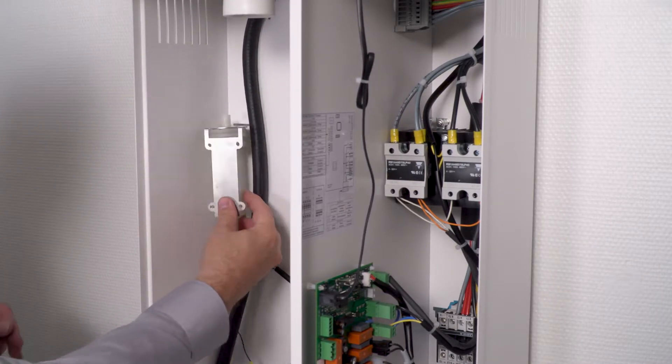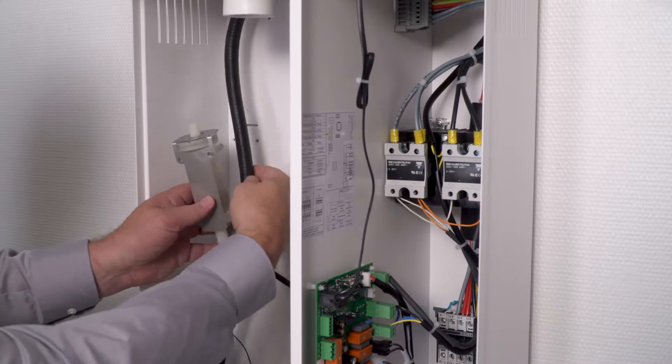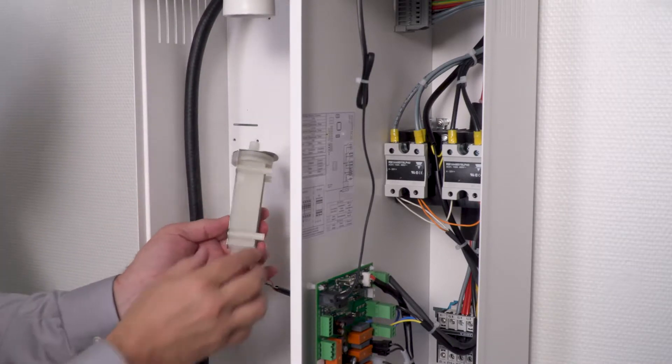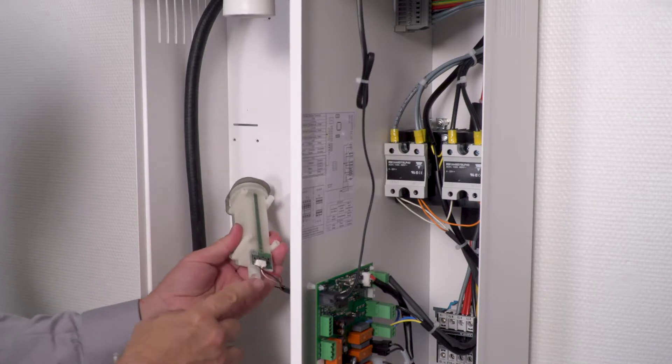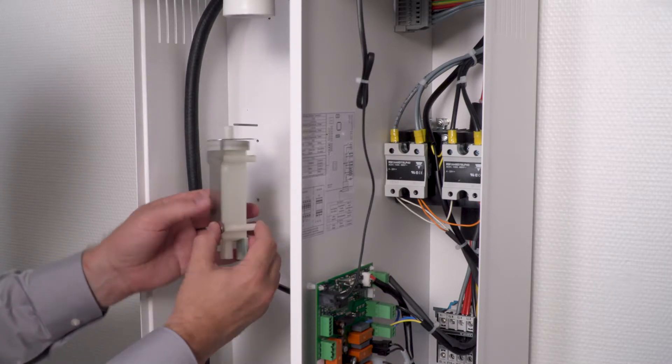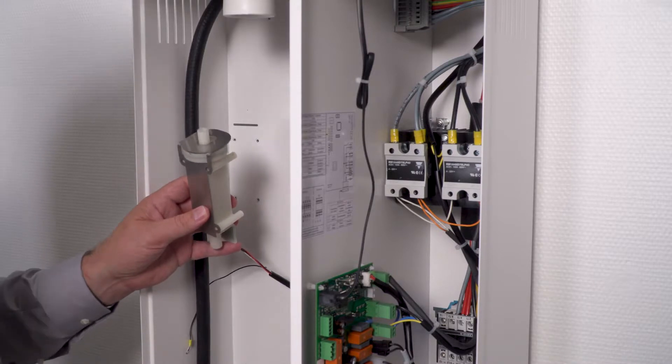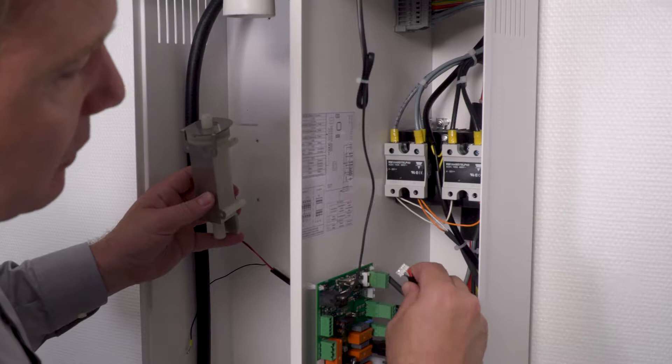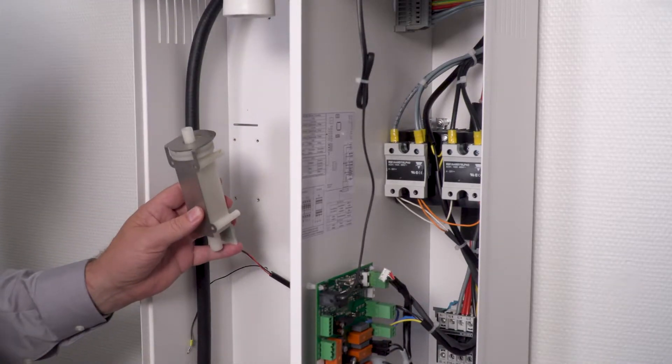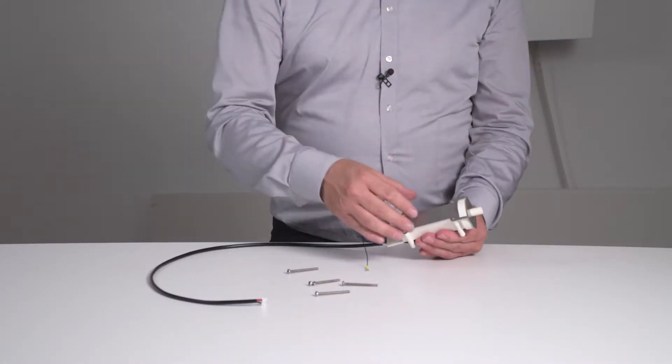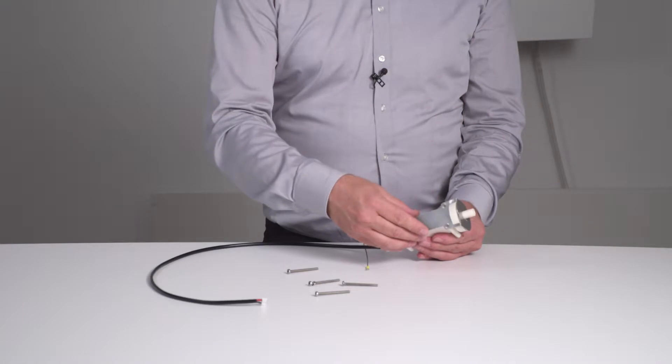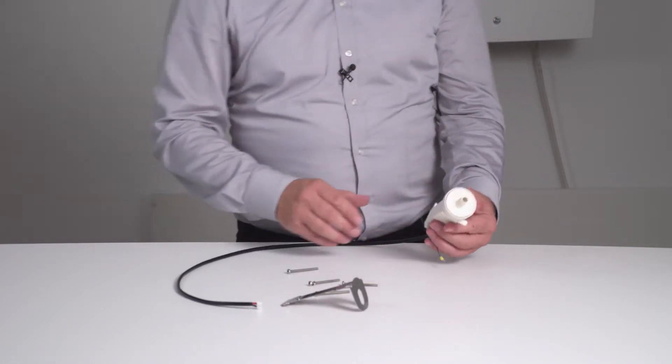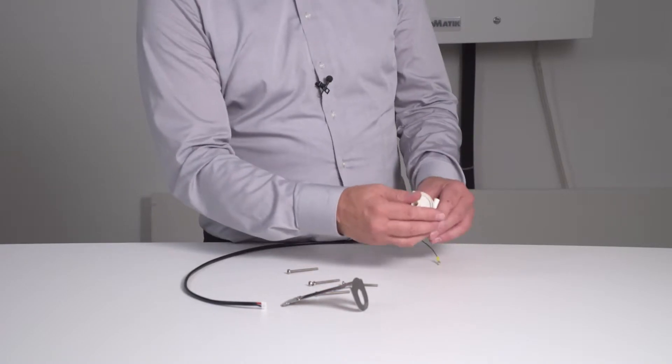Now I can remove the water level control from the back wall of the unit. It's important not to remove the contact plug directly from the water level control. Instead, remove the plug from the main board up here and pull it out of the unit. I now have the water level control in my hand. Now I can remove the shielding plate and open the tank of the water level control.